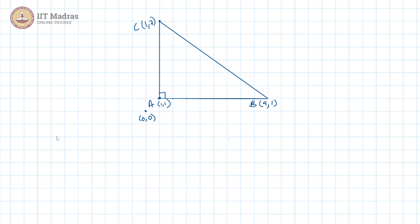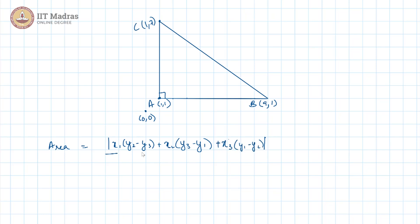We could use the area of triangle formula, and the area will be the modulus of x1 into (y2 minus y3) plus x2 into (y3 minus y1) plus x3 into (y1 minus y2), the whole divided by 2. You can take any of these points to be x1, y1 and the next to be x2, y2 and x3, y3. How you choose x1, y1, x2, y2 and x3, y3 does not matter — the order is what is important.